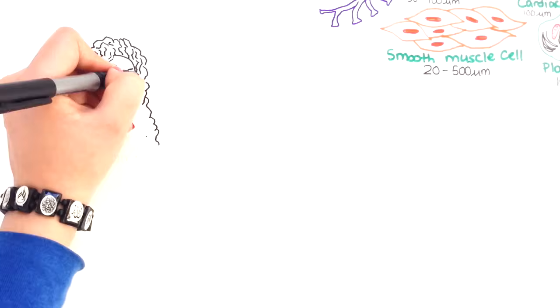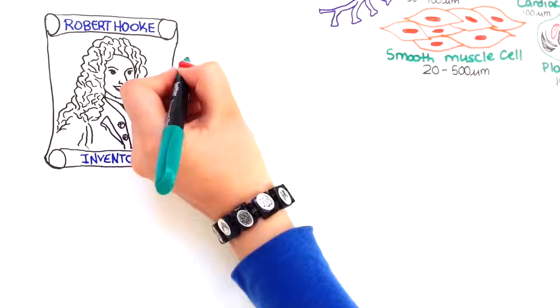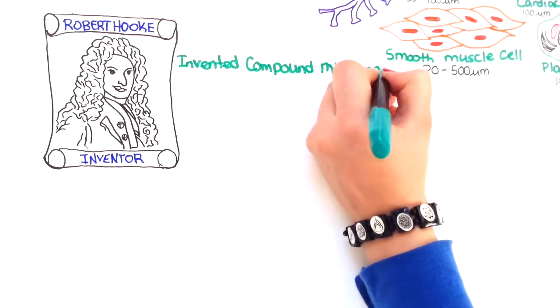Throughout most of human history, scientists knew very little about life and how it works. A scientist by the name of Robert Hooke invented the compound microscope.